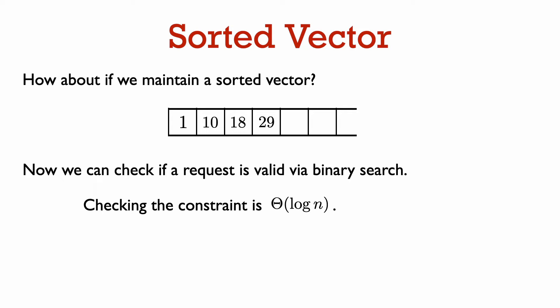What if we still have a vector, but we maintain the landing times in sorted order? Now, when we want to check if we can schedule a landing time t, we can use binary search to find the closest times to t in the vector. This just takes time Θ(log n) when there are n landing times in the vector. So we can verify whether or not the constraint is satisfied fairly quickly.